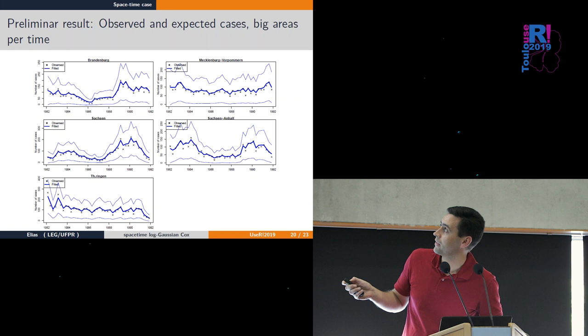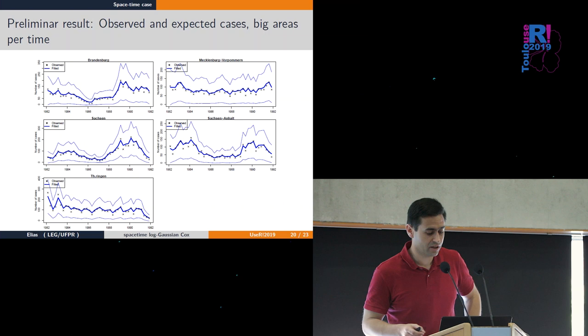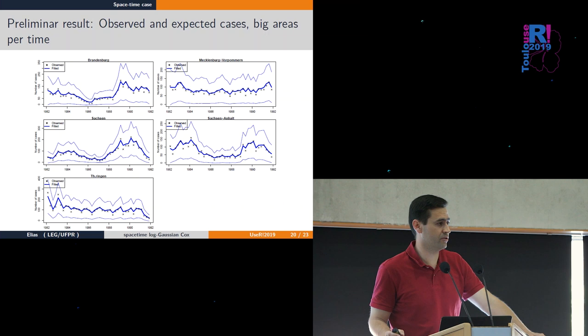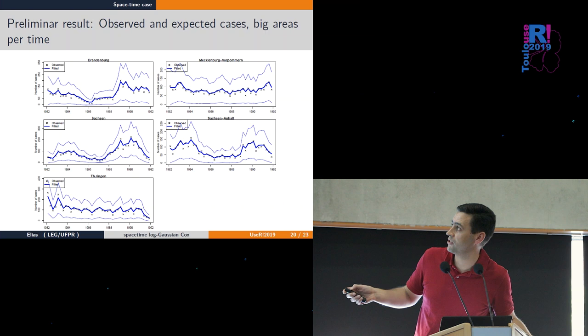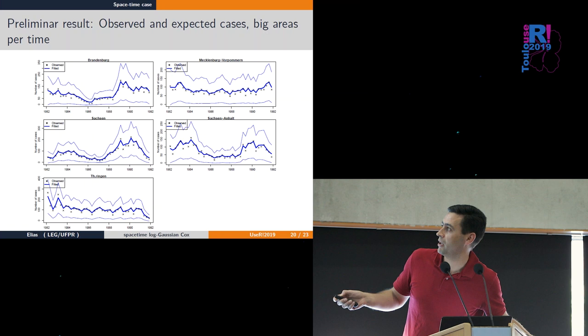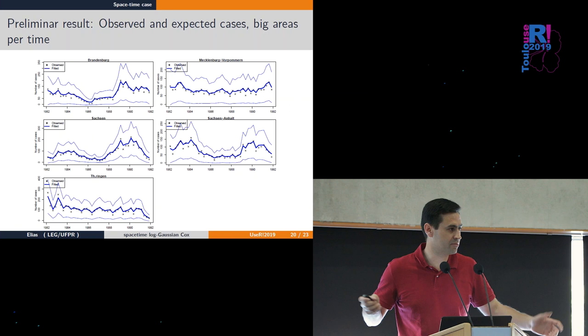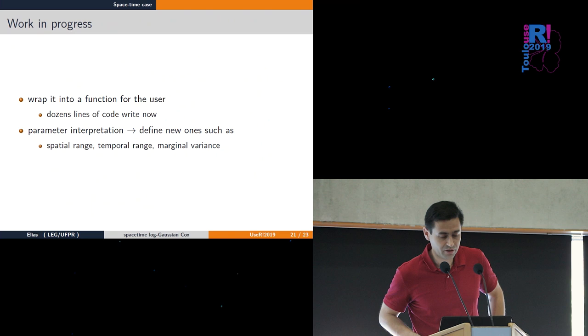For that dataset I have preliminary results. We have five regions on the spatial domain. I'm computing expected and observed number of cases to see if the model is doing well - the dots are observed numbers and the curve is expected. It seems to be doing well, summarized over time and space.